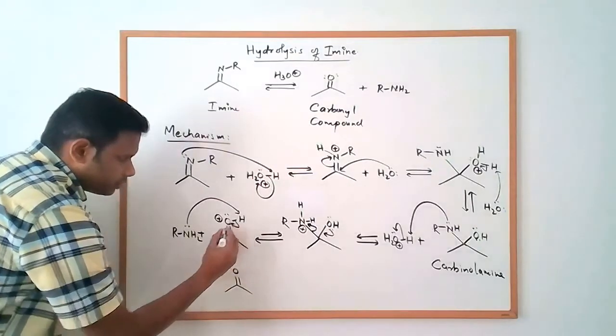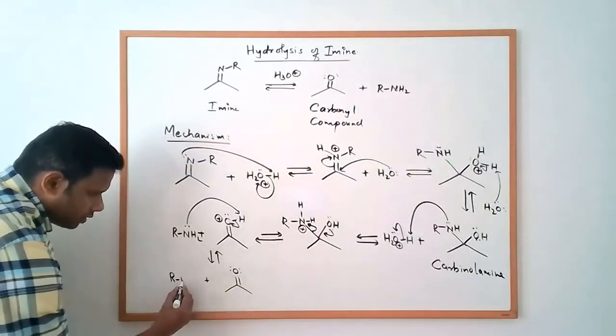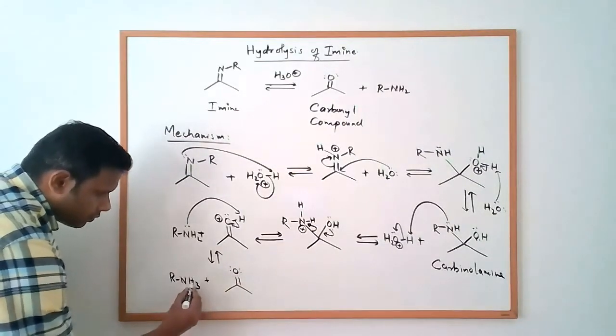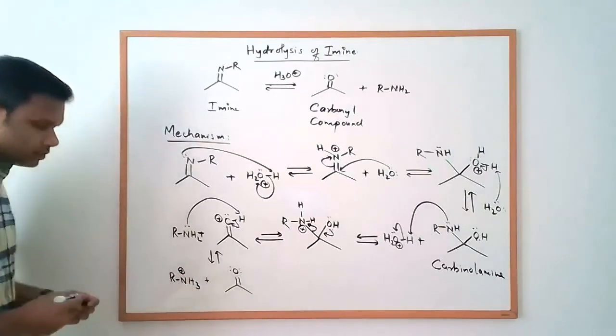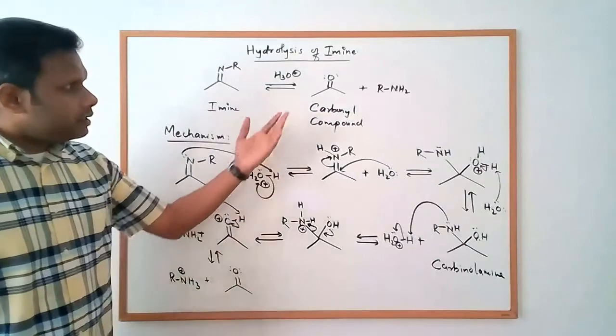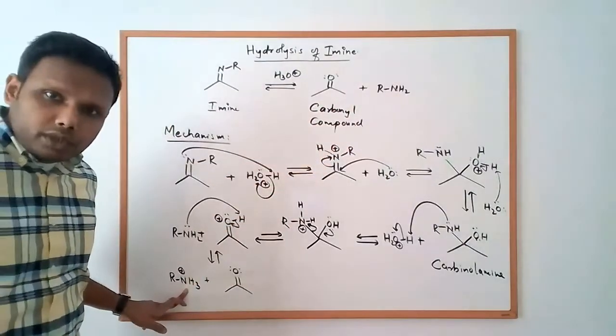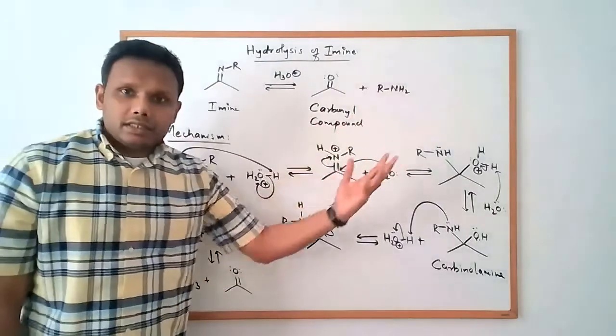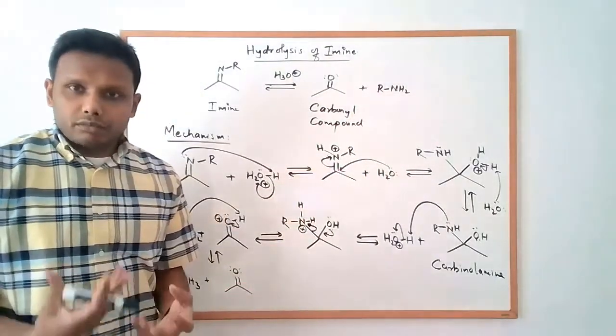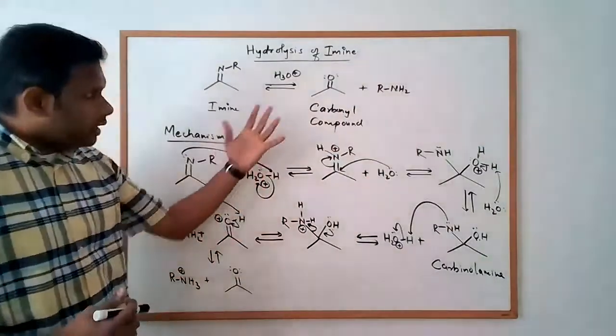these electrons are pushed to the oxygen, we get the carbonyl compound back and plus we can write an ammonium ion and since we are under acidic conditions it is very likely that our amine exists as an ammonium ion instead of existing as a free amine because an amine is a basic molecule.